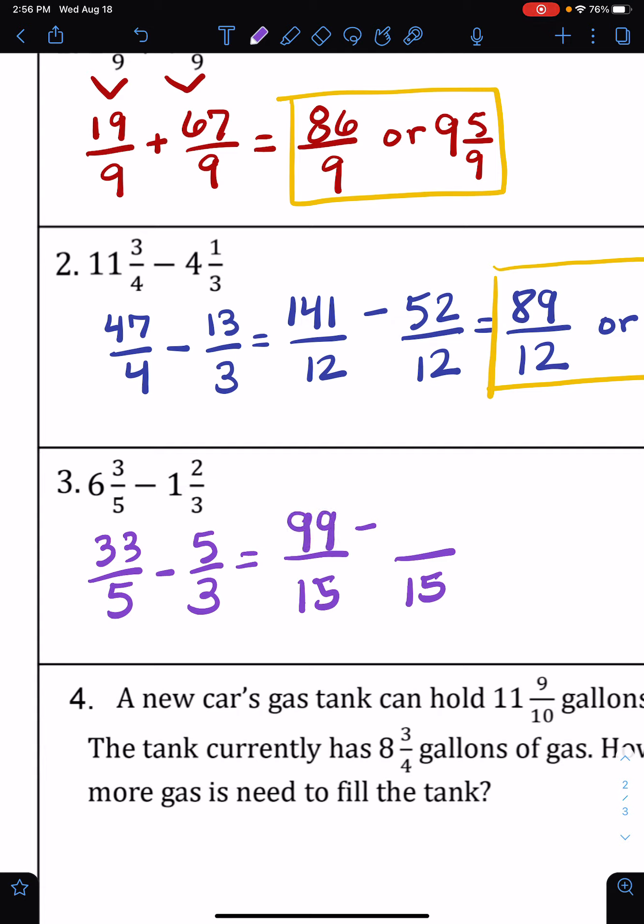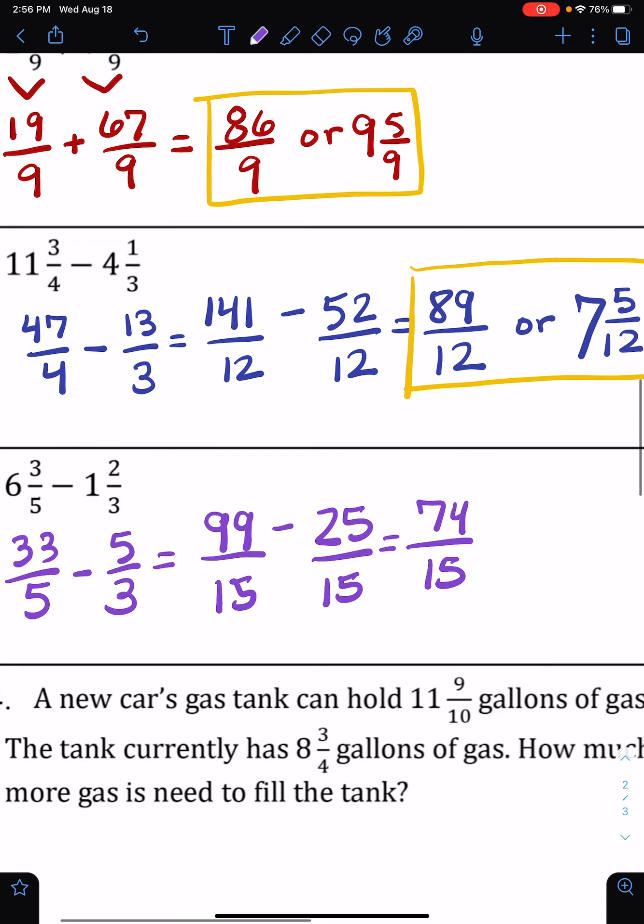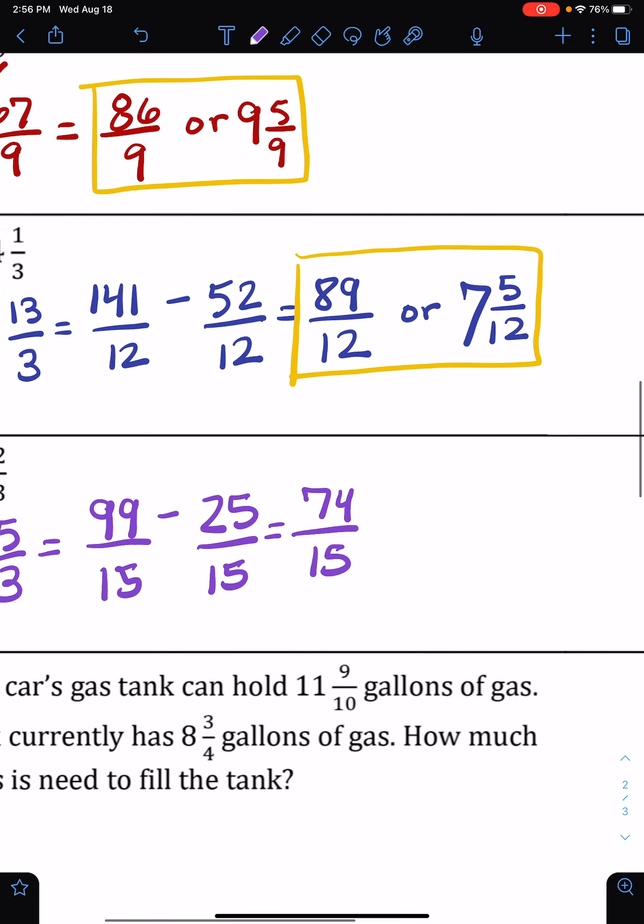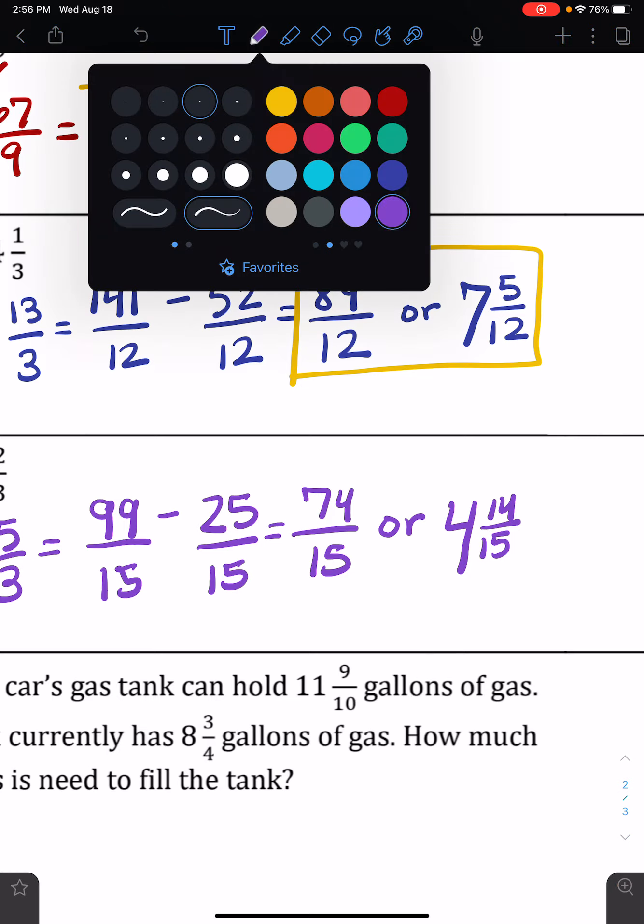And since I need to multiply 3 times 5 for the denominator of 15, I'll do 5 times 5 to get 25. So I'm going to keep the denominator the same and subtract 99 and 25 to get 74. That can be your answer, or if you'd rather, you can change it to a mixed number. 15 times 4 is 60 with 14 left over. Either one of these would be an acceptable answer. I prefer the improper fraction on the left.